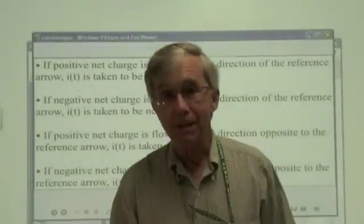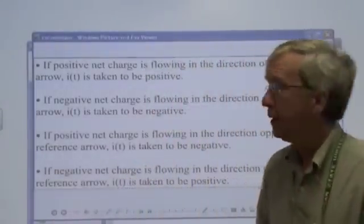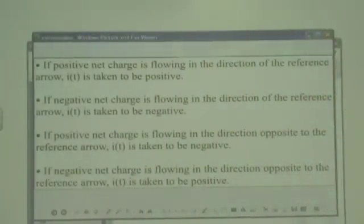And this table summarizes several possibilities. If positive net charge is flowing in the direction of the arrow, we say it's a positive current. But if a net charge is negative flowing in the direction of the reference arrow, the current would be negative. And two other possibilities are listed here as well.